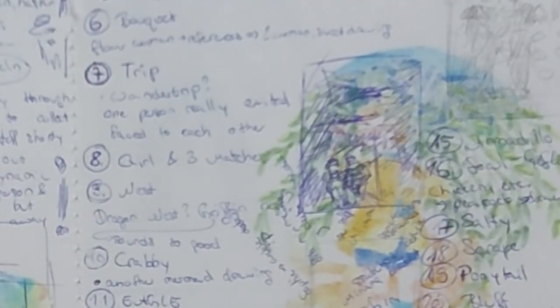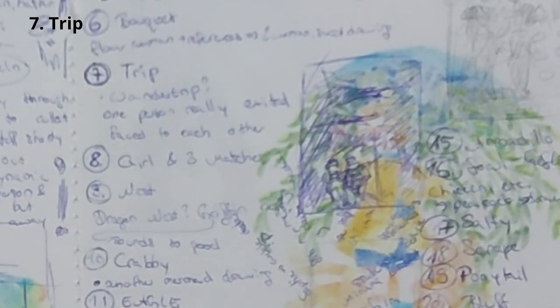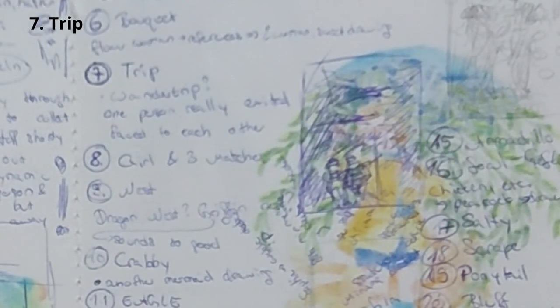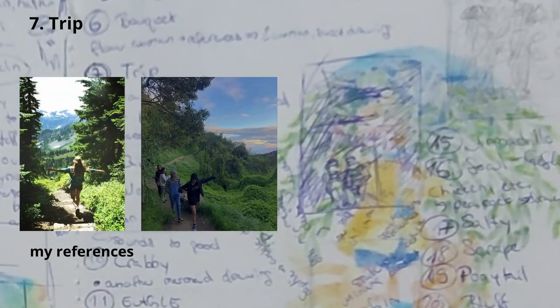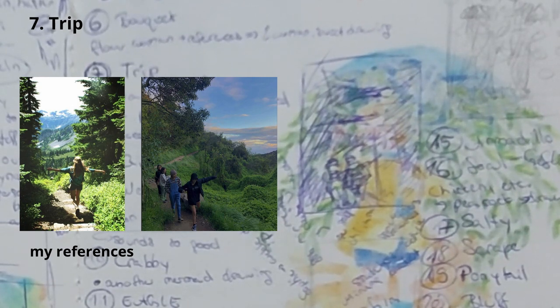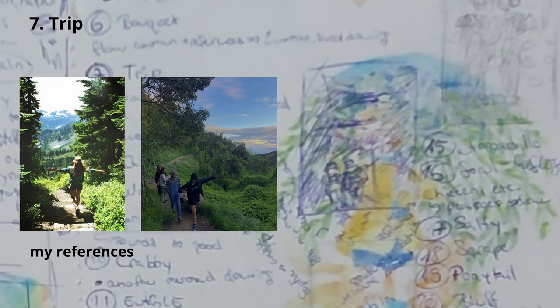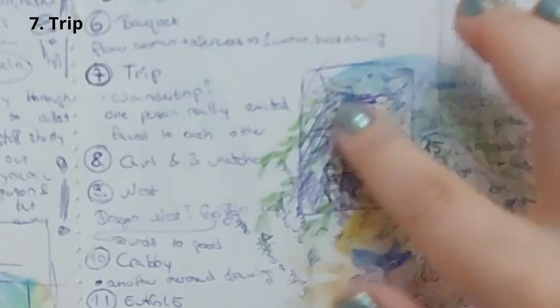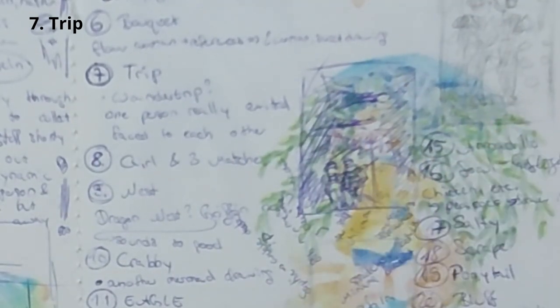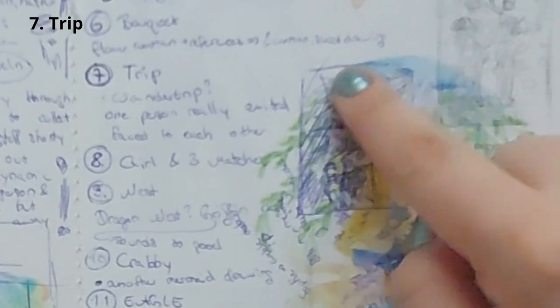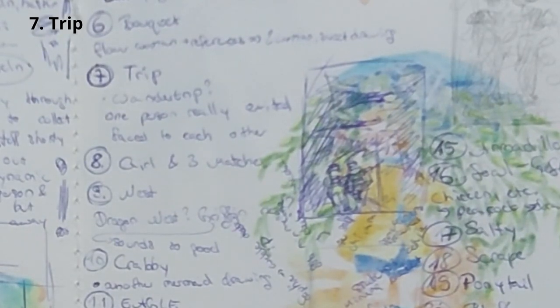Then day seven — 'trip.' That was a hard topic. I thought about maybe wandering around, a wander trip, and they could be really excited to be outside. One of them could be really excited and they could face each other, and they could travel through a forest with the forest around them in the background. But I just was not 100% excited about it, and I didn't have so much energy that day. I just needed some rest from the week, so I didn't do any more.